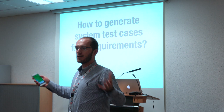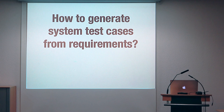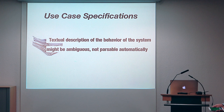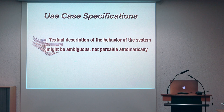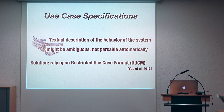This model includes all the behaviors that should be observed in the different usage scenarios described in the use case specifications. This is not easy, because we start from use case specifications, which are textual descriptions of the behavior of the system, and usually they could be written in a very free form by software engineers, so they might be ambiguous. To make automatic generation of models possible, we rely upon the restricted use case format, which is basically a kind of use case template that includes some restriction rules.